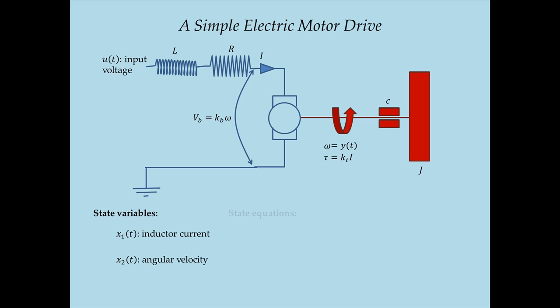To write a state equation for the current through the inductor: the rate of change of inductor current times inductance equals the voltage across the inductor, so X1-dot equals one over L times the voltage across the inductor. The voltage across the inductor equals the input voltage U(t), minus the voltage drop across the resistor R times X1, minus the back EMF K-sub-B times omega. So our first state equation is: X1-dot equals (1/L) times [U(t) minus R·X1 minus K_B·X2].